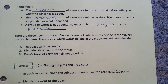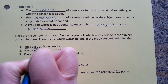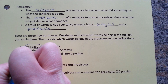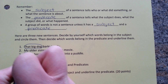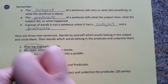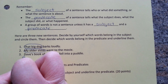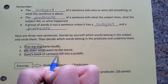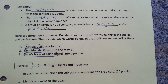In sentence number one, you should have circled that big dog. Number two: my older sister. And three: Dave's book of cartoons. Those are the subjects.